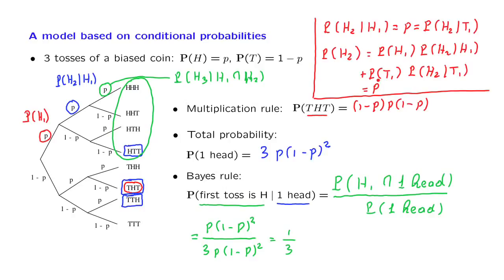Knowing what happened in the first toss doesn't change your beliefs about the second toss. What we will do next is generalize this special situation by giving a formal definition of independence of events, and then discuss various properties and concepts associated with independence.